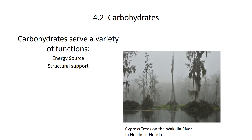Carbohydrates are also used for structural support. We can see this in these cypress trees from the Wekiva River in northern Florida. These trees are over 100 feet tall. The reason they can be so tall is because all the individual cells are surrounded by a cell wall made of cellulose. Cellulose is a type of complex carbohydrate. There are also some proteins in there called lignins that give those trees more rigidity as well.